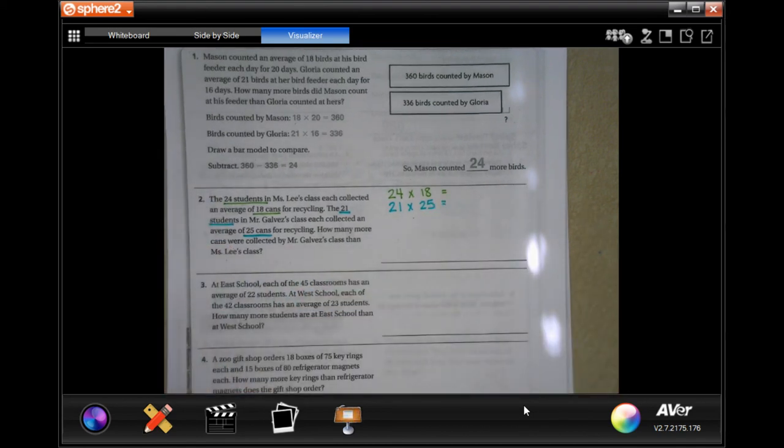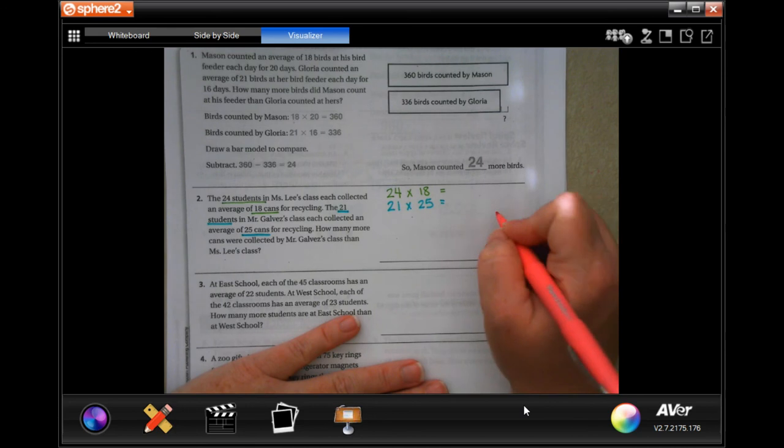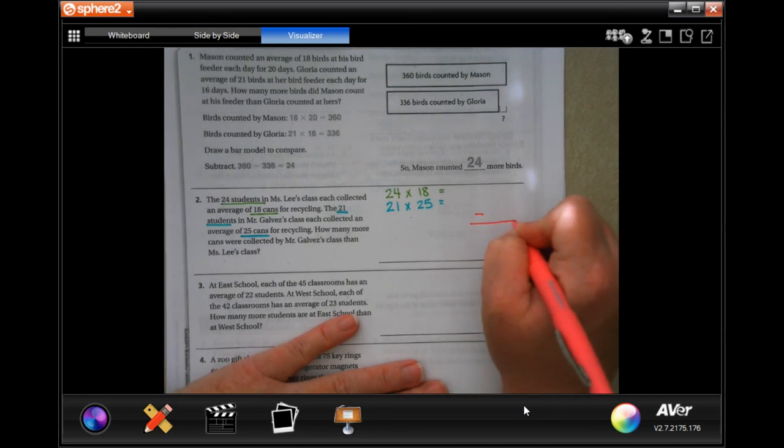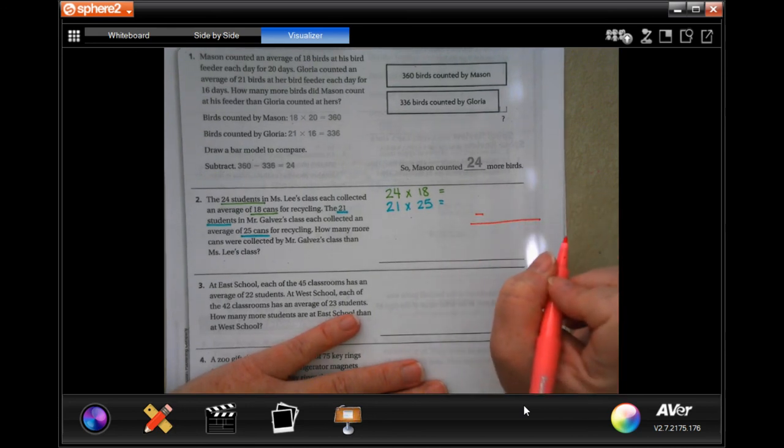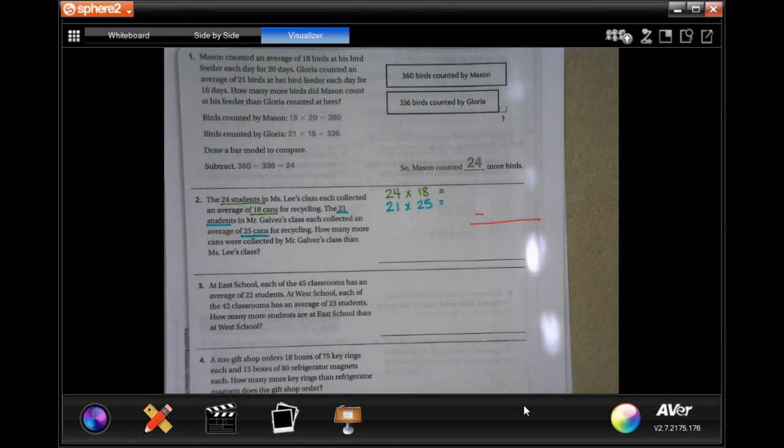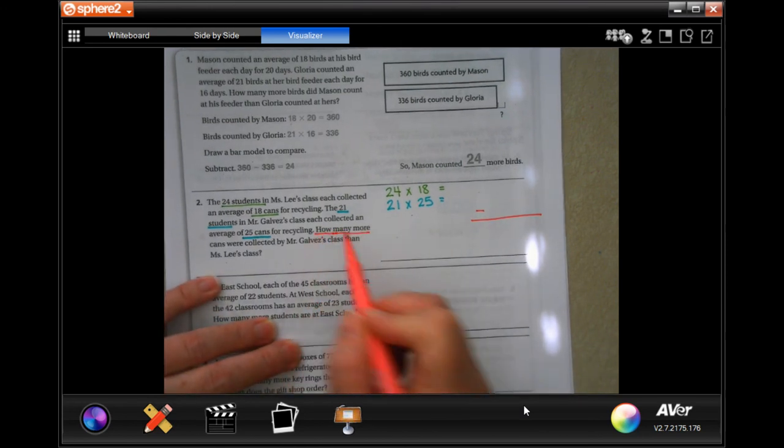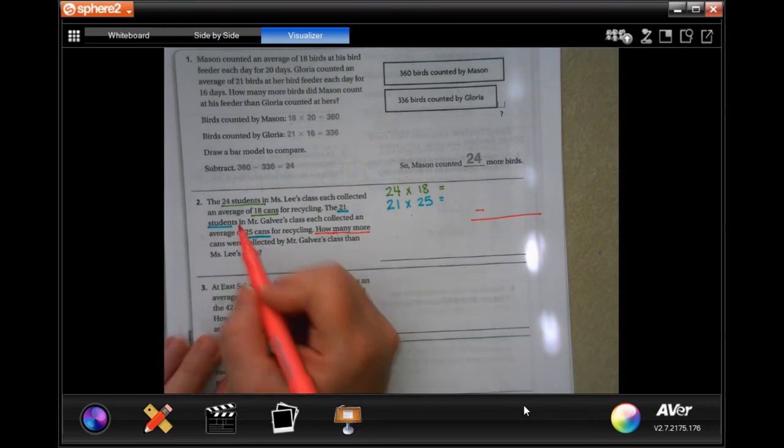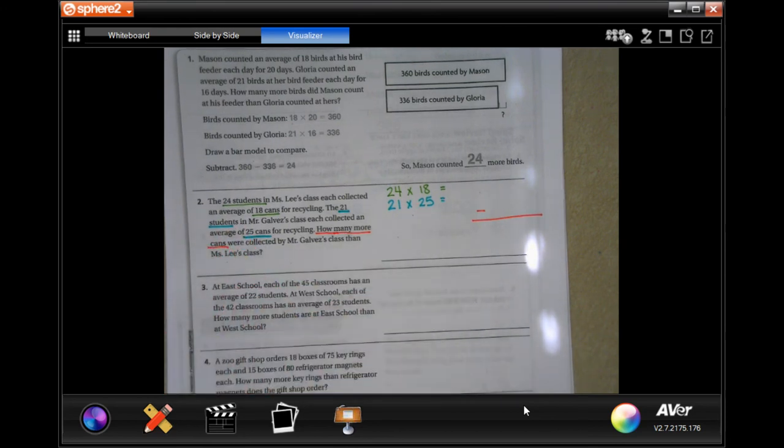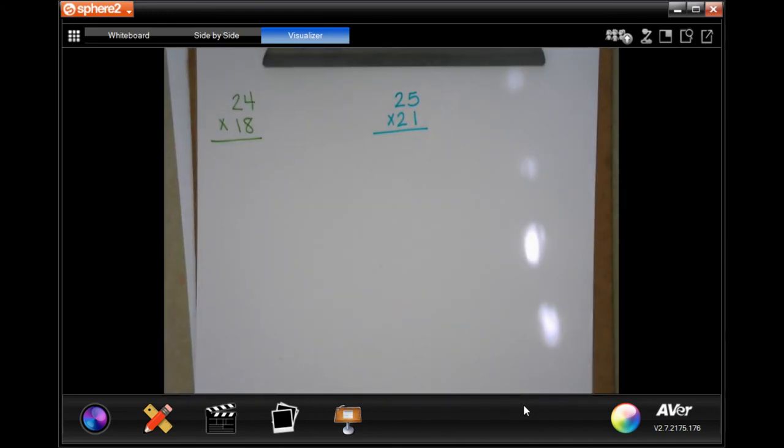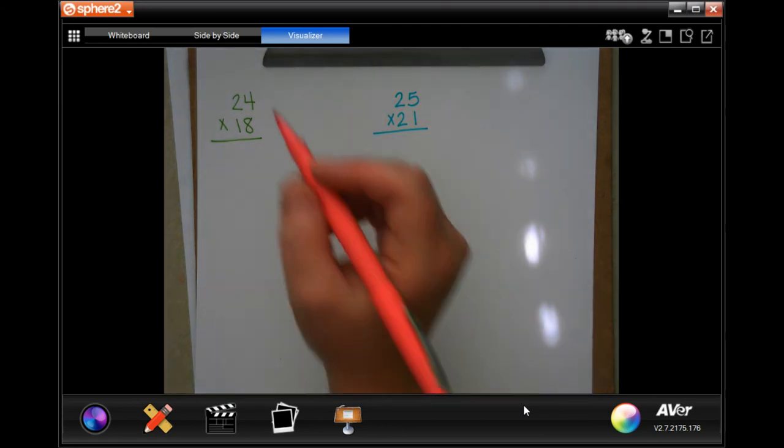So whatever that is, whatever these two numbers are, we need to subtract the smaller one from the bigger one. That's how we find the difference, which is how many more cans. So that means we need to find the difference. Well, you find the difference by subtracting. So I went over here and already wrote down the numbers we need.